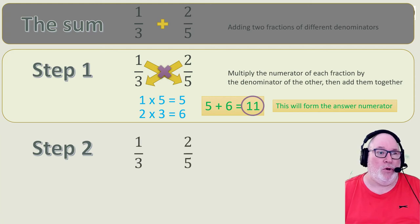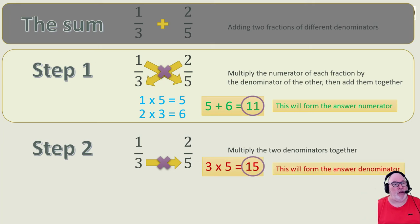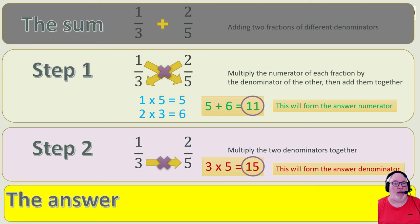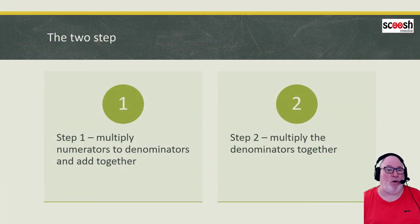Step two is going to be the denominator. What we do is take the two fractions again and multiply the two denominators together. Three times five gives us 15. This forms the answer for the denominator. That is step two. So we put it all together: a third plus two fifths equals 11 over 15. Step one gave us the numerator, step two gave us the denominator. Just a wee reminder of the two steps: step one, multiply the numerators by the denominators opposite; step two, multiply the two denominators together.